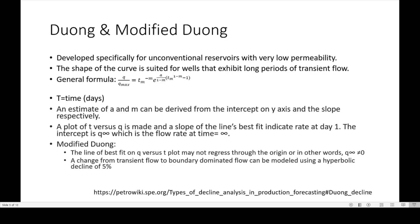Next I'll talk about is Duong and modified Duong. It's developed specifically for unconventional reservoirs with very low permeability, such as the Bakken. The shape of the curve is suited for wells that exhibit long periods of transient flow. Here's the general formula of the Duong method, where you have Q over Q max, and then a series of relations with your time and your M and A factors. An estimate of A and M can be derived from an intercept on the y-axis and a slope, respectively.